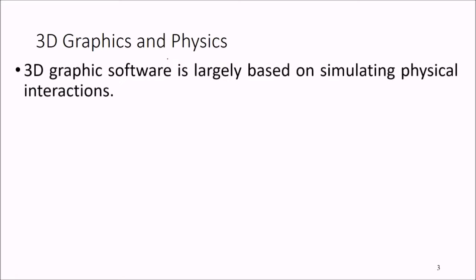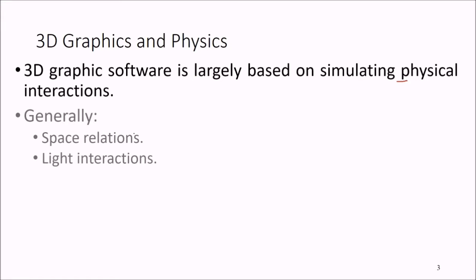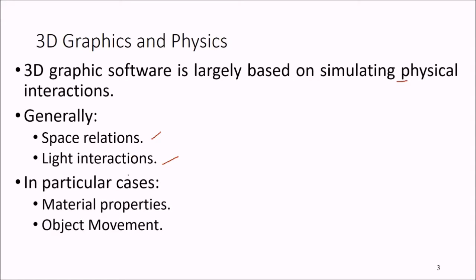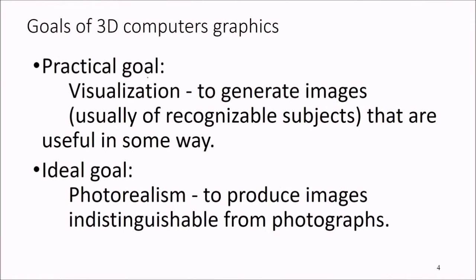What are the graphics and physics of 3D? 3D graphics software is largely based on simulating physical interaction — most of the physics are involved. Generally we have space relations and light interactions, and in particular cases the material properties and object movement. The goals of 3D computer graphics: first is visualization — to generate images of recognizable subjects. The ideal goal is photorealism, i.e. to produce images indistinguishable from photographs.